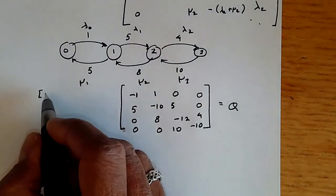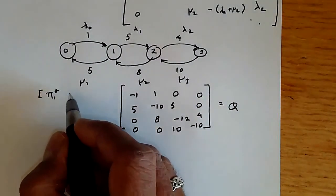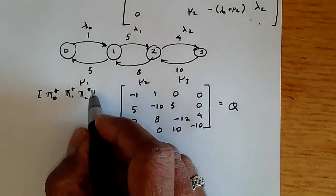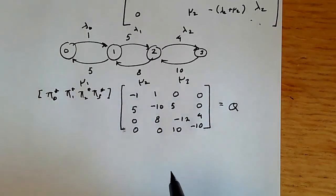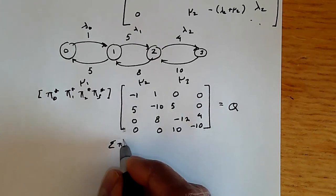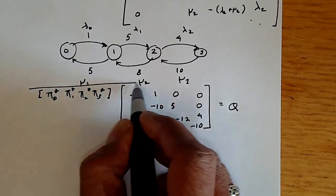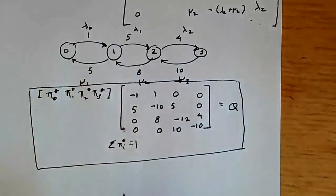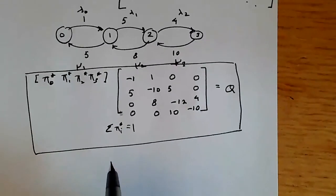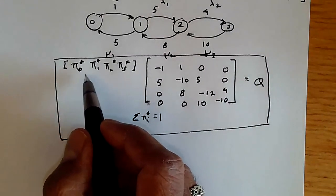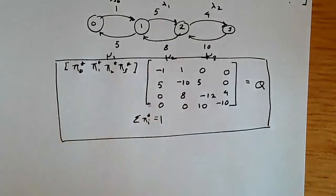Writing [π*_0, π*_1, π*_2, π*_3] multiplied by this Q matrix, together with the normalization equation Σ π*_i = 1, completely defines the behavior of this birth-death process. We can find the probability of being in each state simply by solving this system of linear equations.